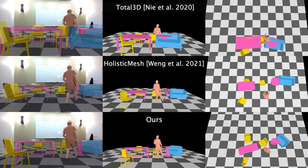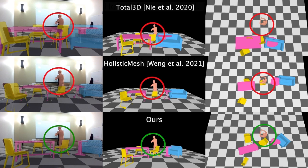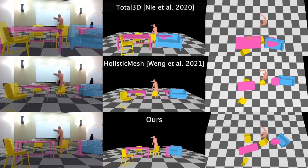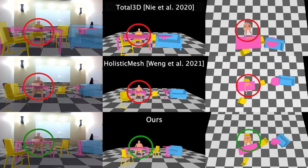Besides, the estimated multiple bodies for one person in HolisticMesh have different body shapes, leading to severe translation jittering problems. The human floats in the air in Total3D Understanding, while the table in the estimated scene from HolisticMesh has inter-penetration with sitting bodies.